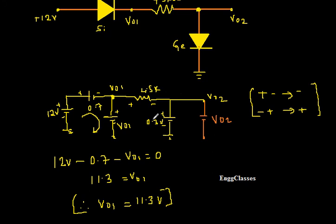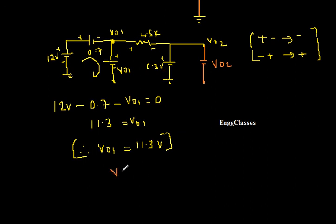V02 is nothing but the voltage of 0.3 volt. I can simply write V02 equal to 0.3 volt. I can say it very easily, which turns out to be 0.3 volt. This is how I find V02 or I can apply KVL to this loop and find V02.